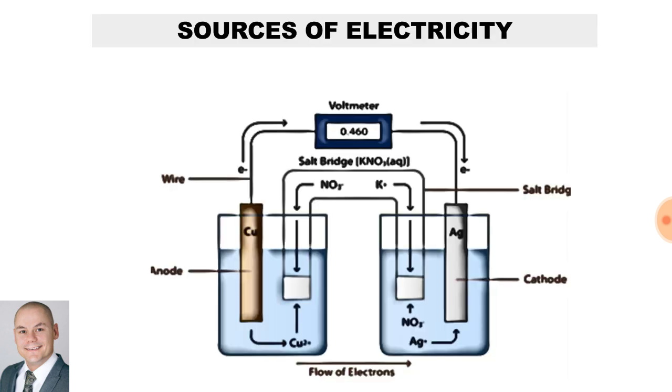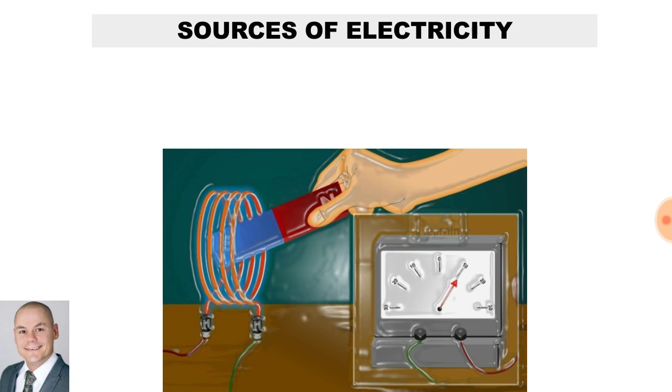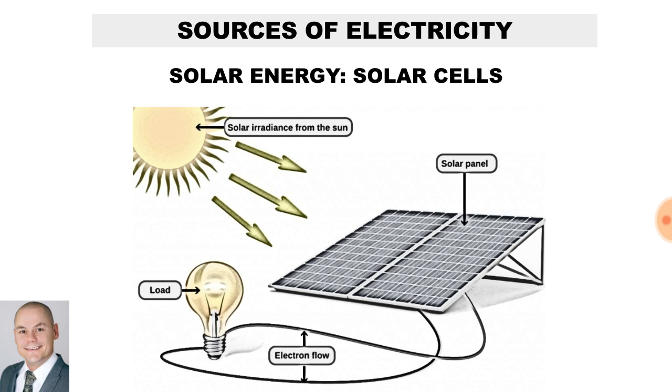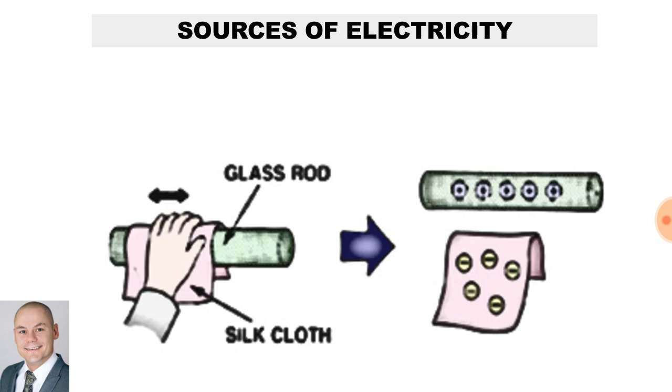There are different types of sources of electricity such as chemical reaction where we use primary and secondary cells, electromagnetic induction where we use generators and motors, solar energy where we use solar cells, heat where we use a thermal couple, and friction and static such as rubbing silk on glass.